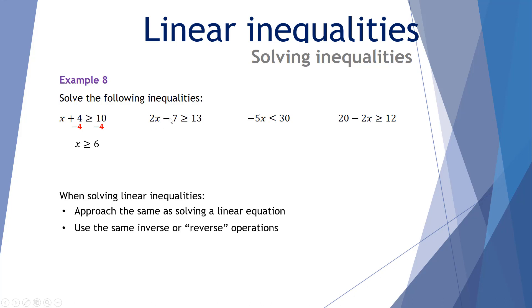A second example: 2x - 7 ≥ 13. First, add 7 to both sides — that cancels the negative 7, giving 2x on the left and 20 on the right: 2x ≥ 20. Then divide both sides by 2, leaving x ≥ 10. Substituting back: if x = 10, then 2 × 10 - 7 = 13, which is greater than or equal to 13. If x = 11, then 2 × 11 - 7 = 15, which is greater than or equal to 13. It holds true.